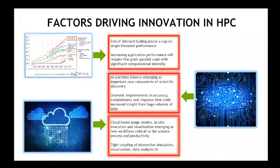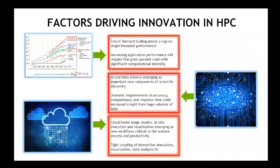At the top left, we have a chart used by the Exascale Computing Program to describe the challenge with Exascale Computing, which would be conventional HPC. The challenge there is that Dennard Scaling ended ten years ago — we talked a bit about that in the panel last night. Dennard Scaling was the magic that happened with Moore's Law: every time we doubled the number of transistors on a die, it could go faster.